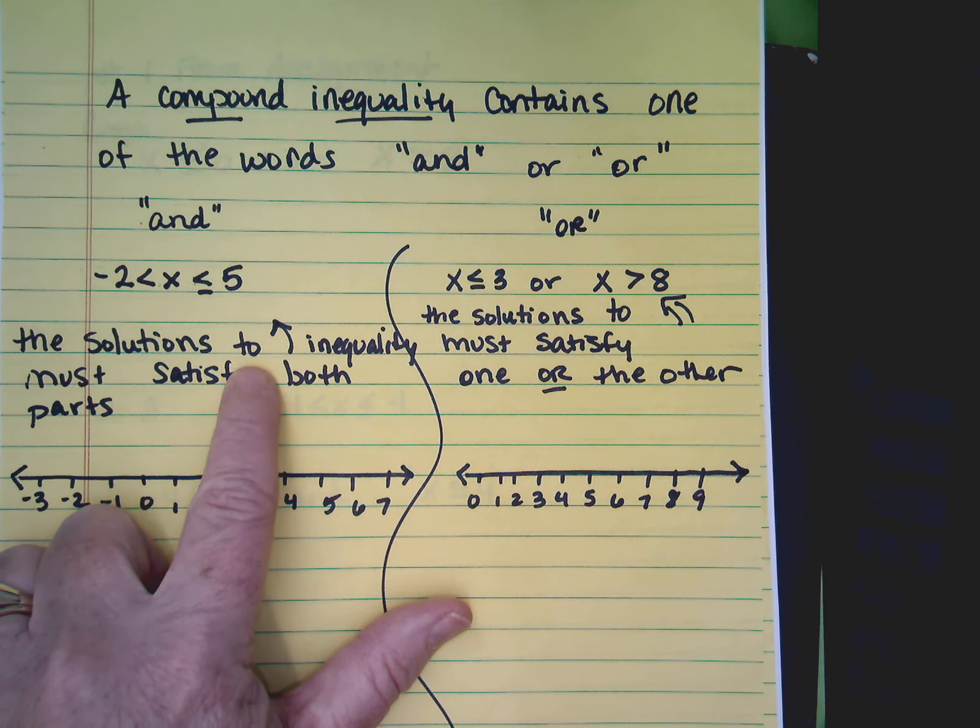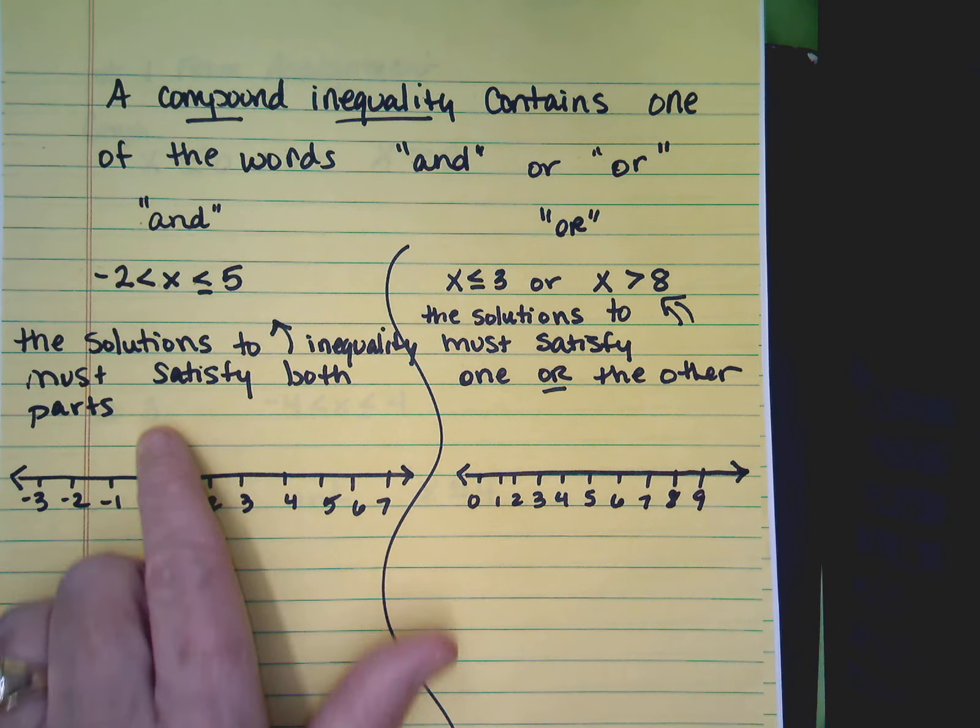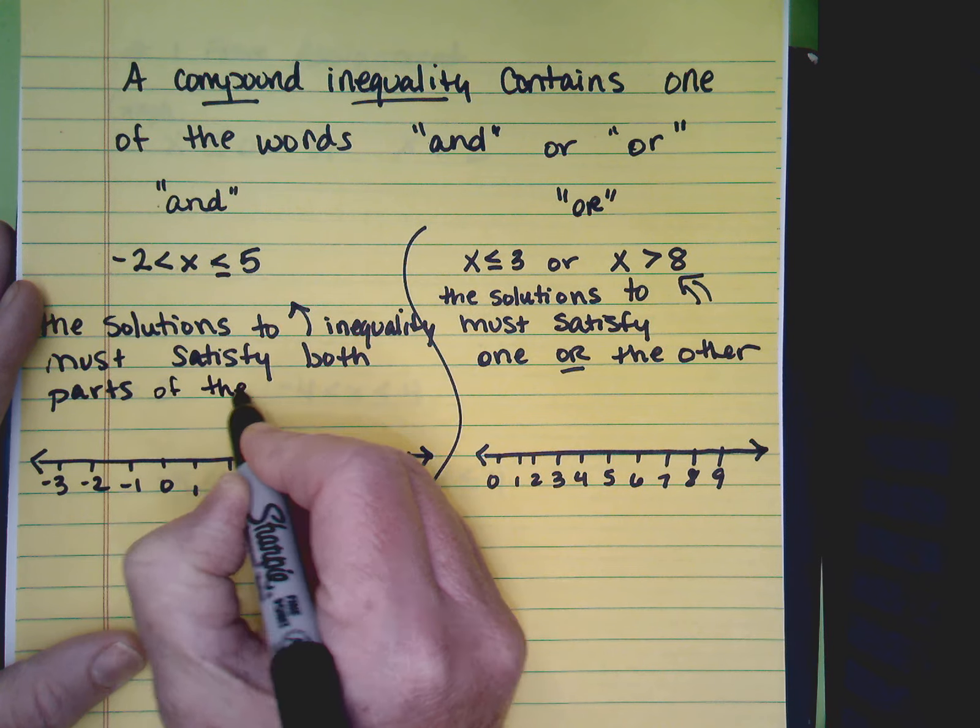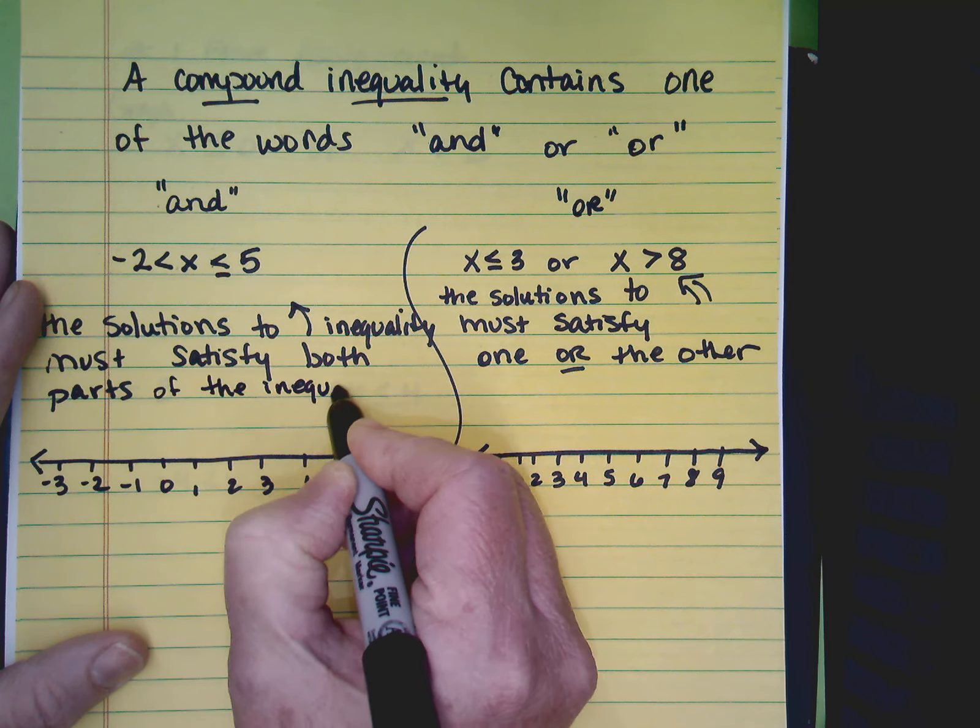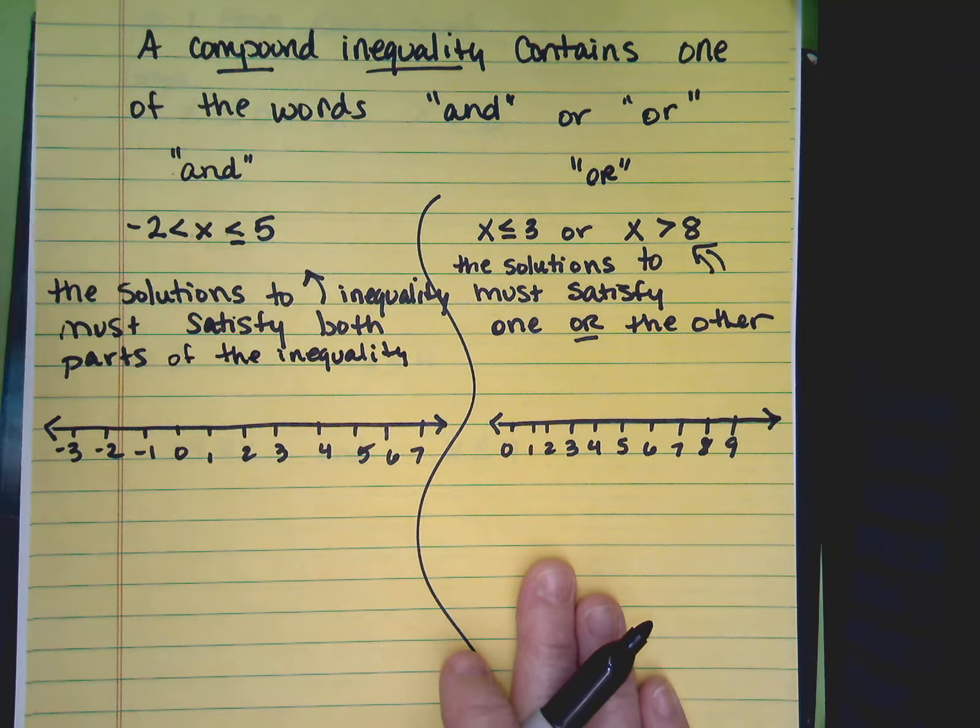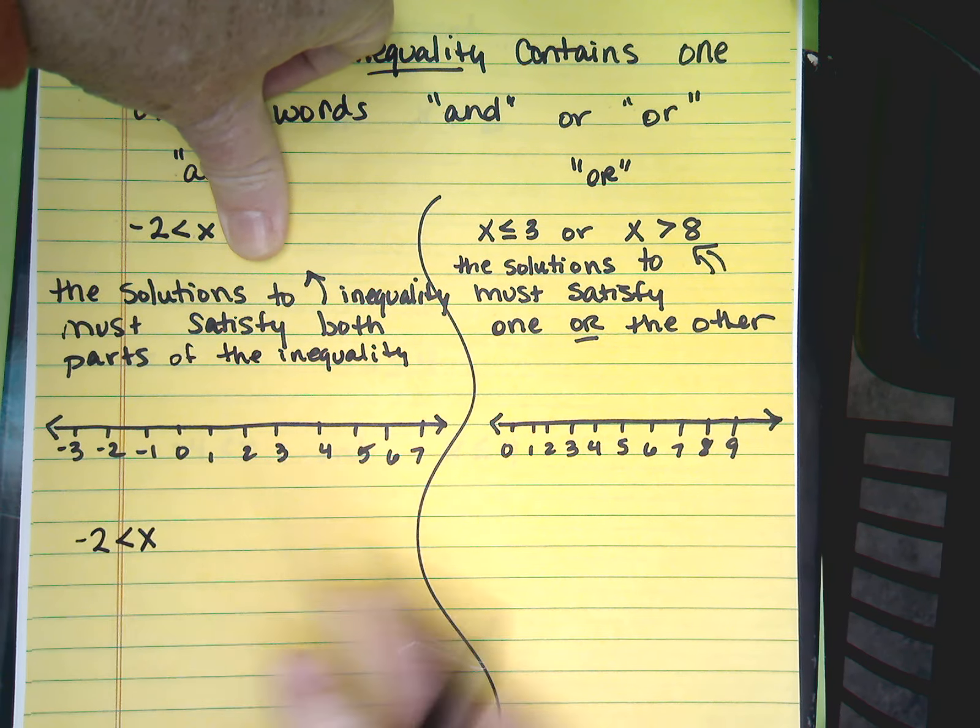The solutions to this inequality must satisfy both parts of the graph. So how are you going to graph that? Well, you're going to look at inequality. You're going to graph negative 2 is less than x.